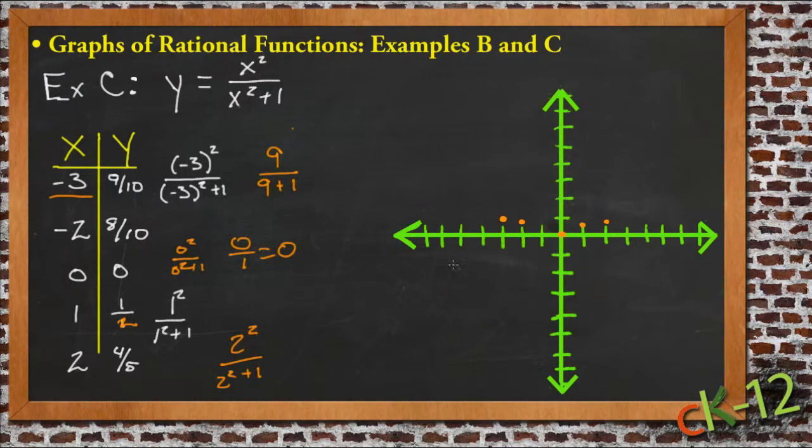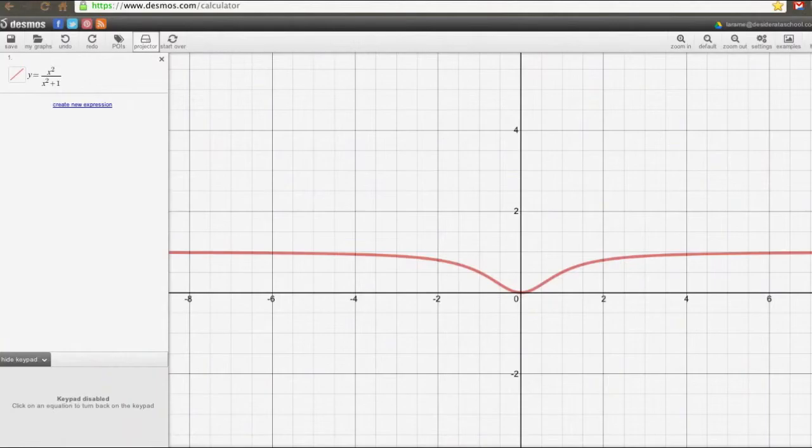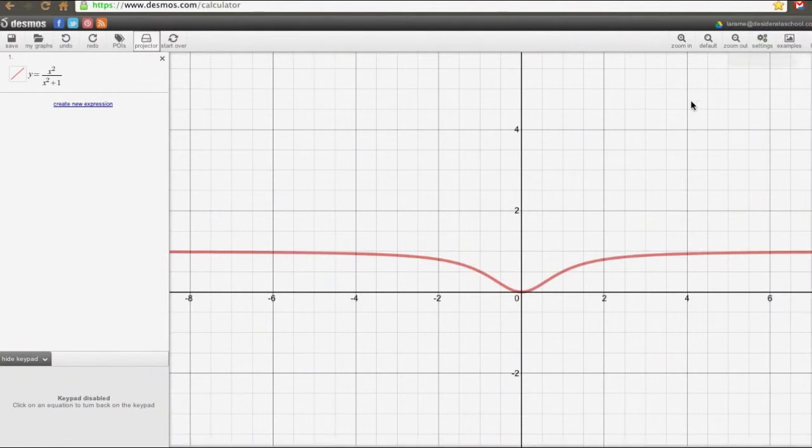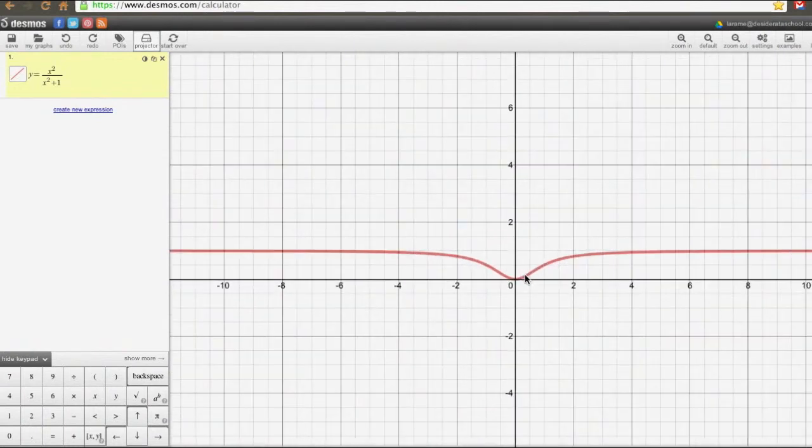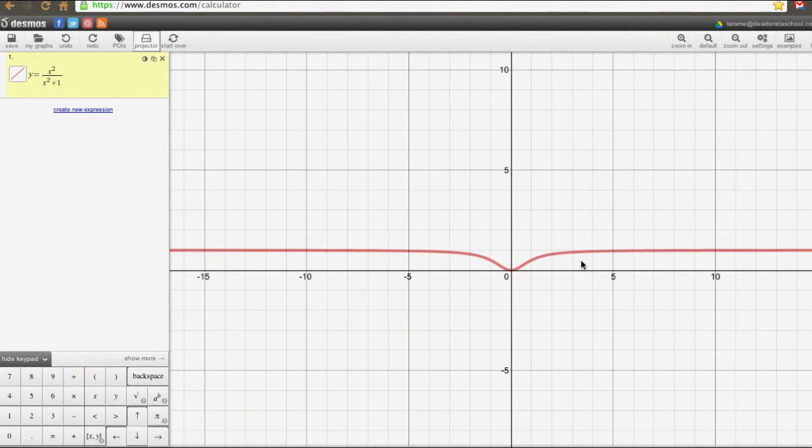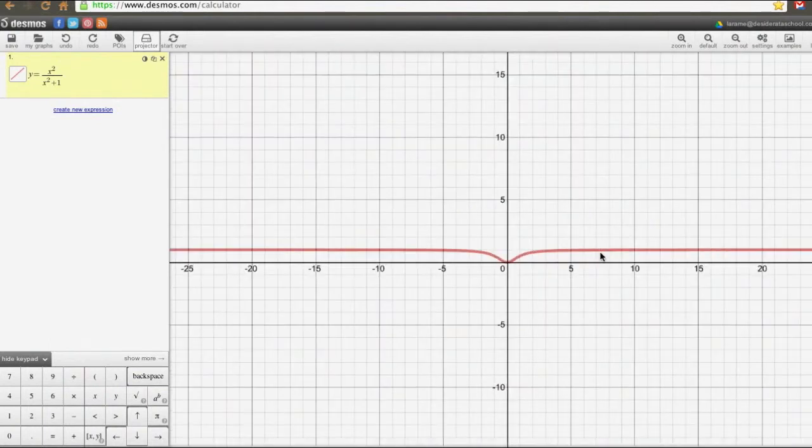Now I went ahead and finished graphing this function using the Desmos graphing calculator right here. So you can see that here's about where the points we came up with were. You can see that the lines really level out just as we start to get away from 2, and by 4 they're almost level, and then they just continue just below 1.